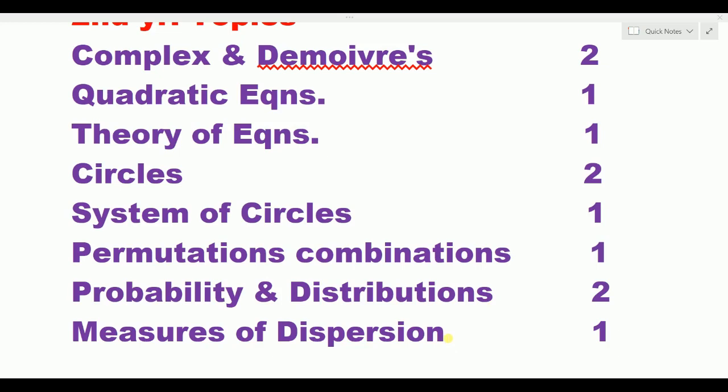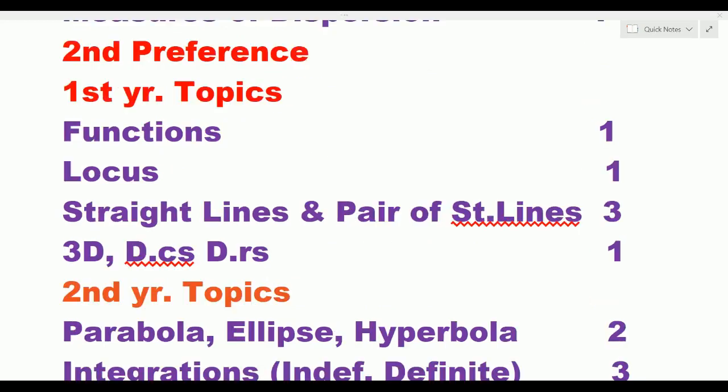Very simple topic: measures of dispersion — one day spend. So you know the first and second year topics. In each year, finish the first reference topics first, then second reference. These are the second reference topics, covering first year topics and second year topics in order.